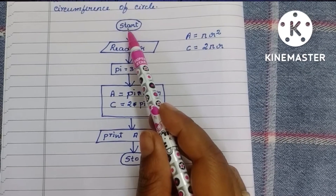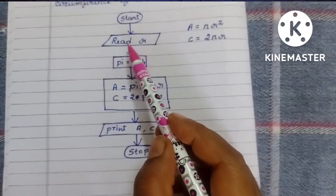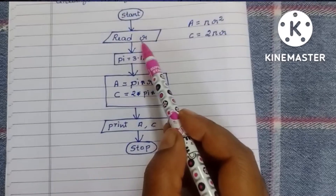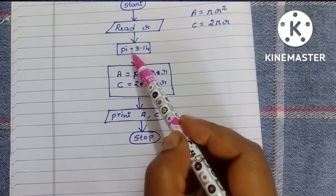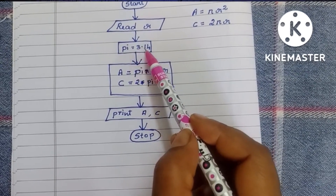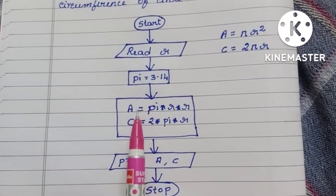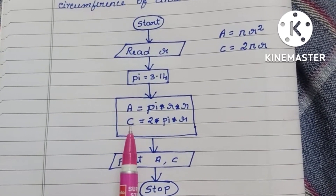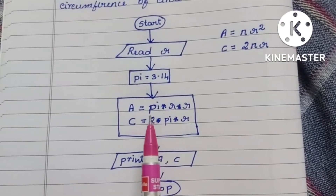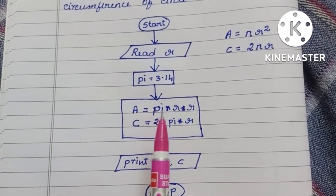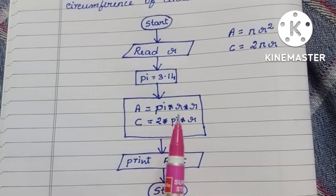To summarize: initially we write the start statement within an oval shape. After that we read the value of radius r. Next we declare the value of pi as 3.14. Then we calculate the area using the formula pi × r × r, where r is the radius.